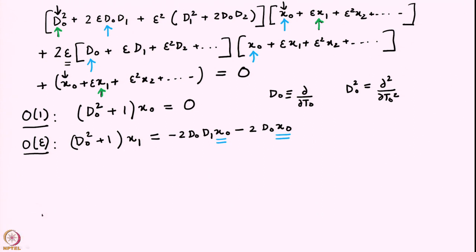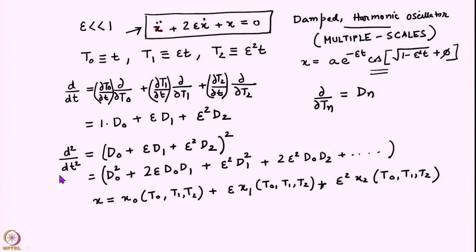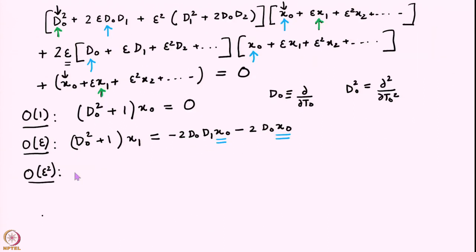Let us write one more order — order epsilon² — because the damping shows up at order epsilon, but the change in frequency (slightly different from 1) appears only at order epsilon². We are not doing the full tedious calculation; we will just find the order-epsilon² correction to x0, which contains the essential aspects of the calculation.